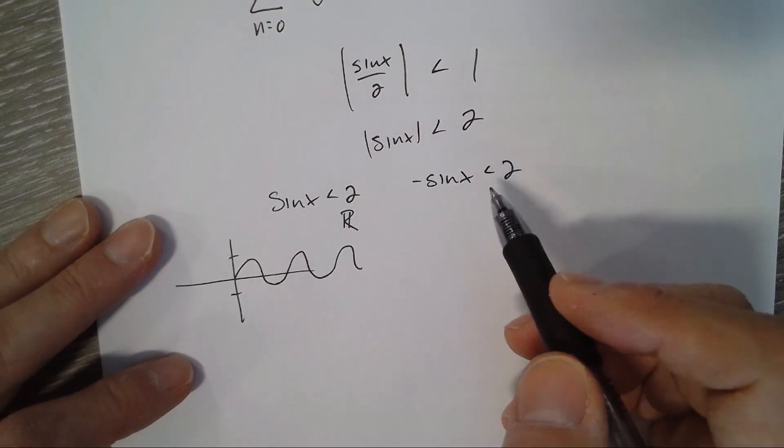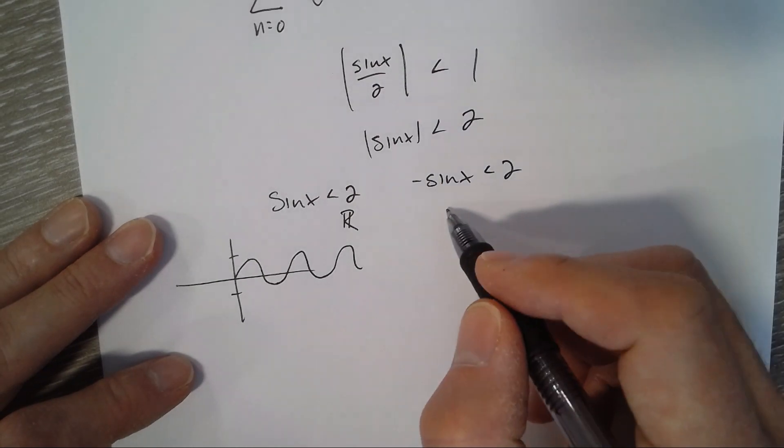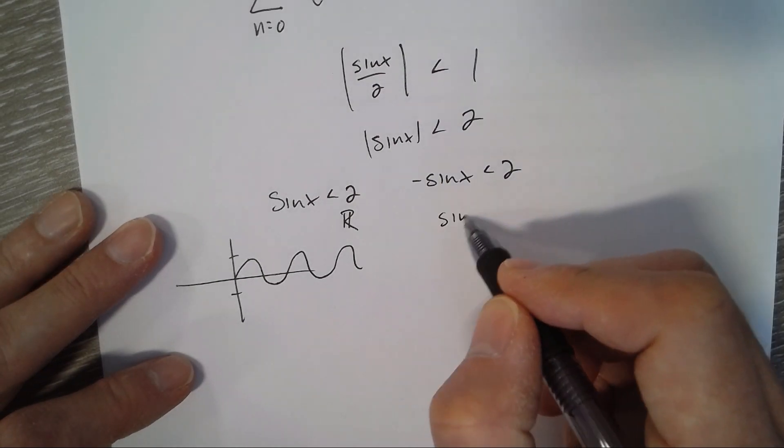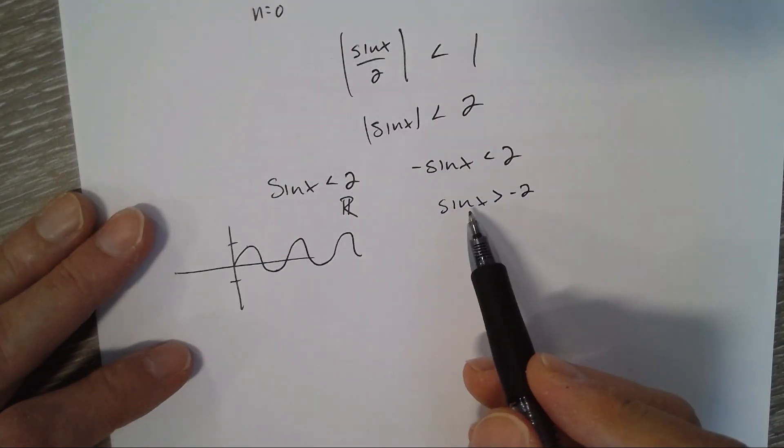Looking at this one, it's got to meet both of them in order for it to be the interval of convergence. If I divide by negative 1, I get sin x is greater than negative 2.